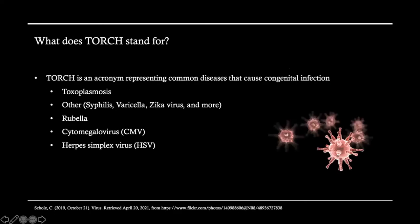So what does TORCH stand for? It is an acronym that represents common diseases that can cause congenital infection. T stands for toxoplasmosis, O for other — including a variety of conditions such as syphilis, varicella, and more — R for rubella, C for cytomegalovirus, and H for herpes simplex virus.